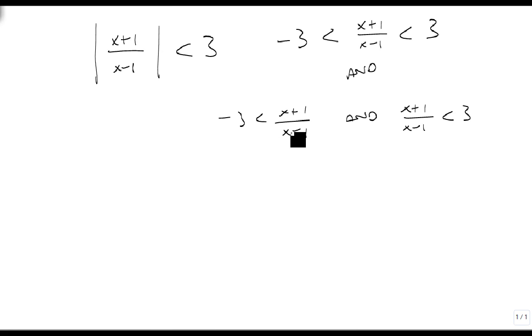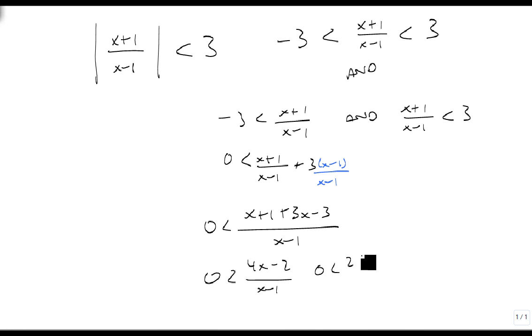Well, here, let's add 3 to the other side. So 0 is less than (x + 1)/(x - 1) + 3. Let's multiply the top and the bottom by x - 1 so we get the same denominator. That's (x + 1 + 3x - 3)/(x - 1), which is (4x - 2)/(x - 1), or 0 is less than 2(2x - 1)/(x - 1). This is the one we're going to be solving first.